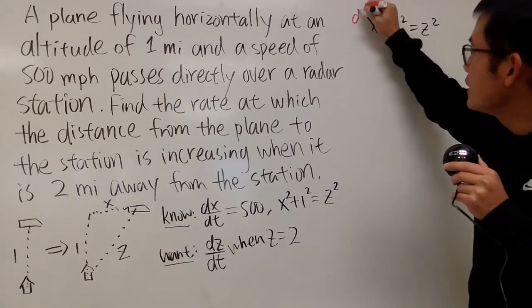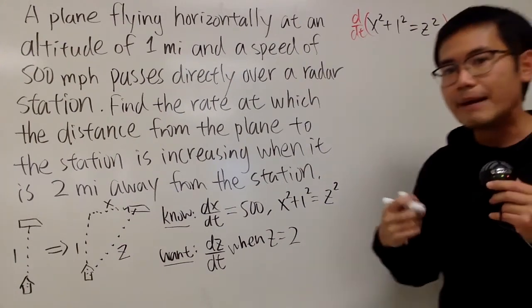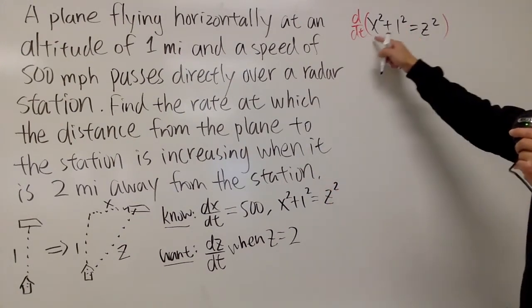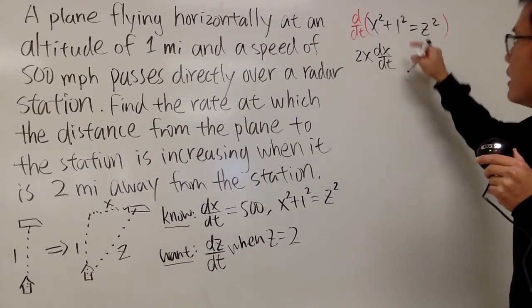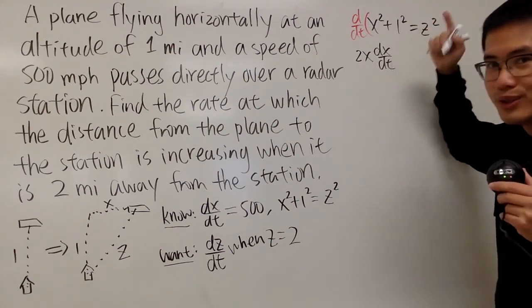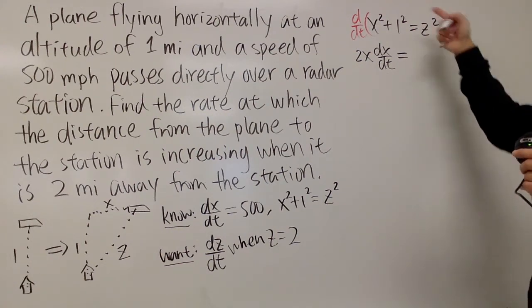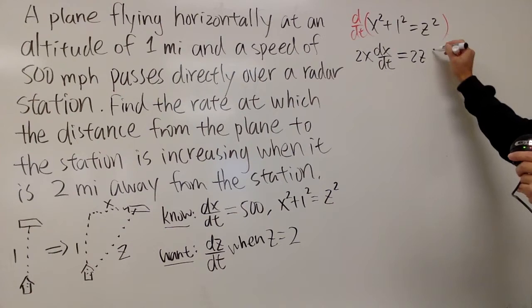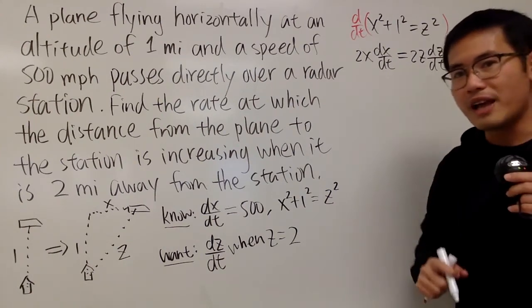From here, let me differentiate this with respect to time. Remember, x and z are both functions of time. When we differentiate this, we first get 2x and then dx/dt. Differentiating 1 squared, which is just going to give you 0, that's very nice. And differentiate this with respect to time, we get 2z dz/dt.